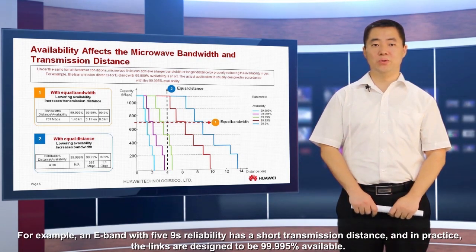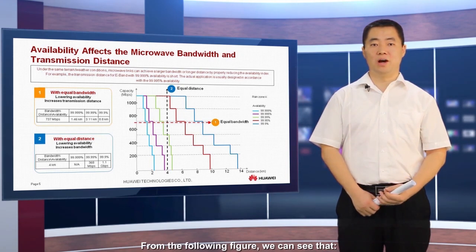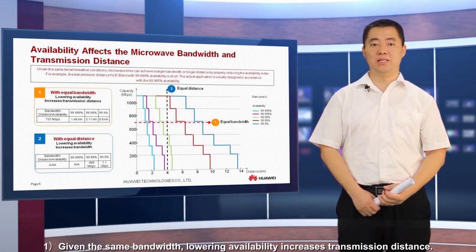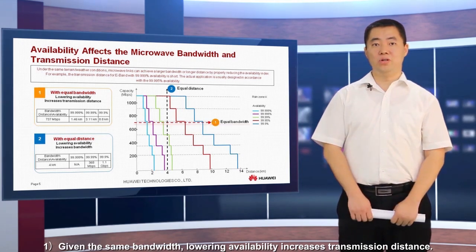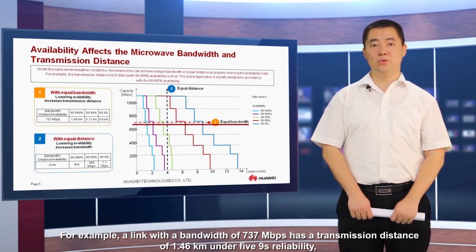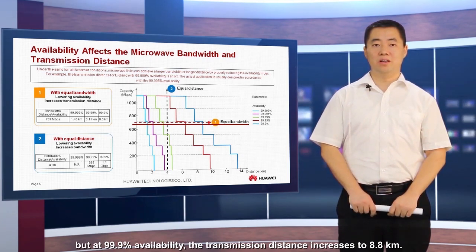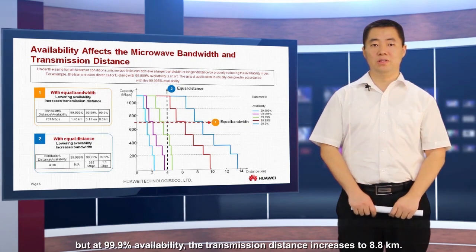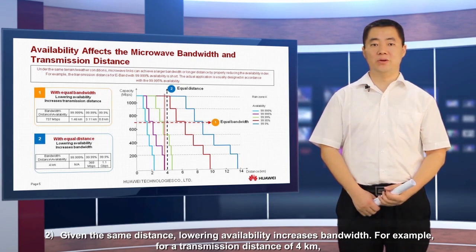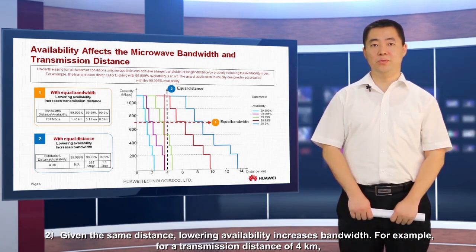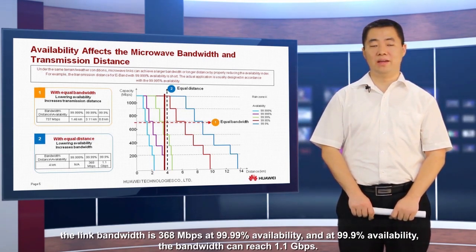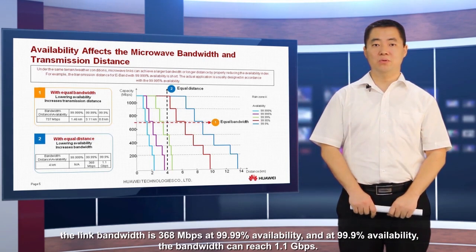From the following figure we can see that: 1. Given the same bandwidth, lowering availability increases transmission distance. For example, a link with a bandwidth of 737 Mbps has a transmission distance of 1.46 km under five nines reliability, but at 99.9% availability, the transmission distance increases to 8.8 km. 2. Given the same distance, lowering availability increases bandwidth. For example, for a transmission distance of 4 km, the link bandwidth is 368 Mbps at 99.99% availability, and at 99.9% availability, the bandwidth can reach 1.1 Gbps.